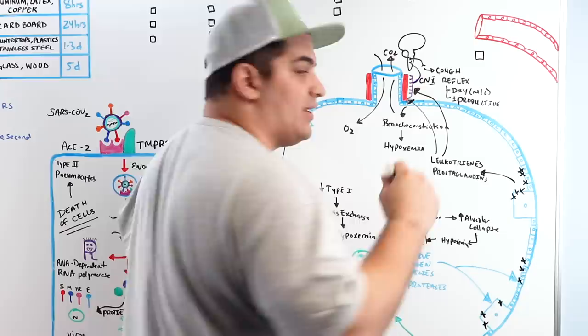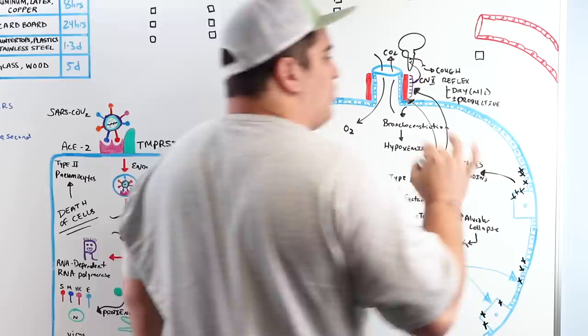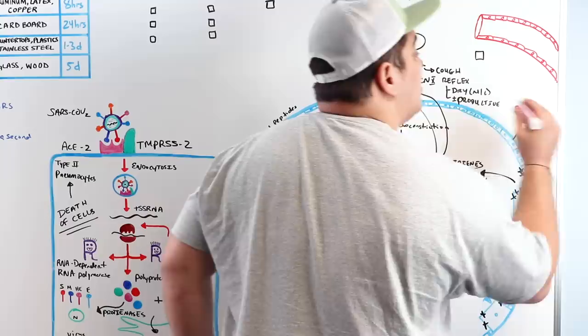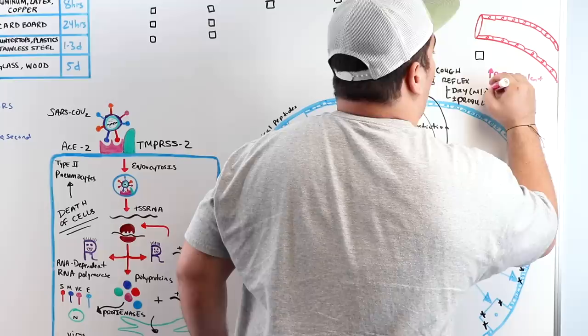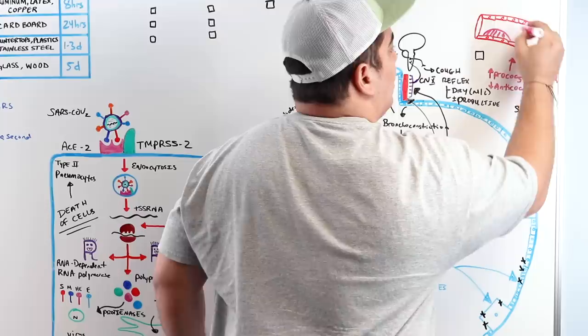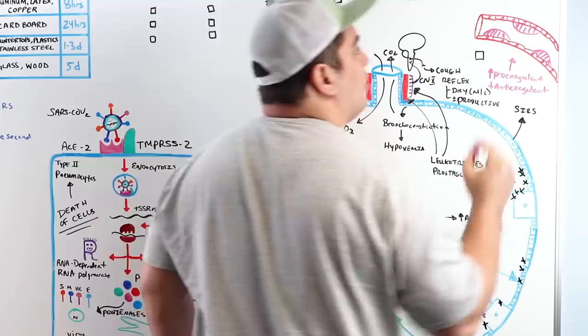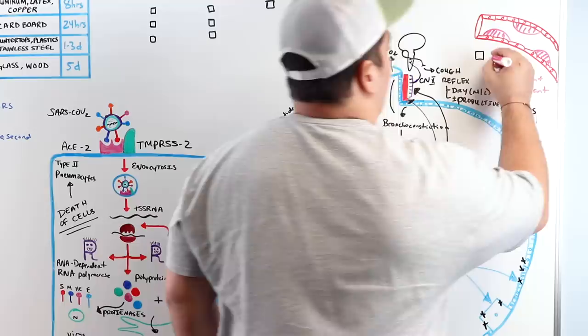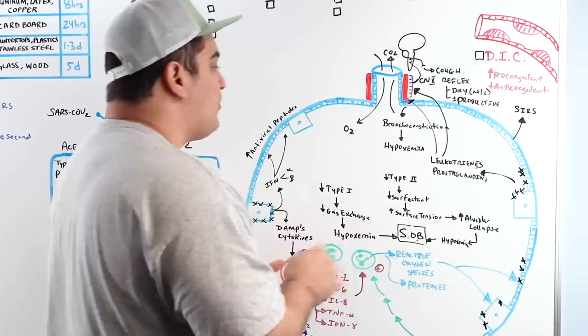The pulmonary inflammation can spread into the systemic circulation, causing systemic inflammatory response syndrome (SIRS). If cytokines increase pro-coagulant activity and decrease anti-coagulant activity systemically, multiple clots form throughout the systemic circulation, consuming coagulation proteins. When coagulation proteins are depleted, clotting fails — this is called disseminated intravascular coagulation (DIC).